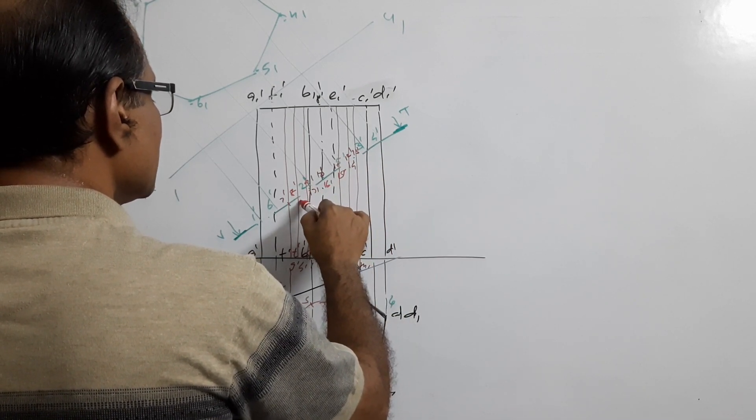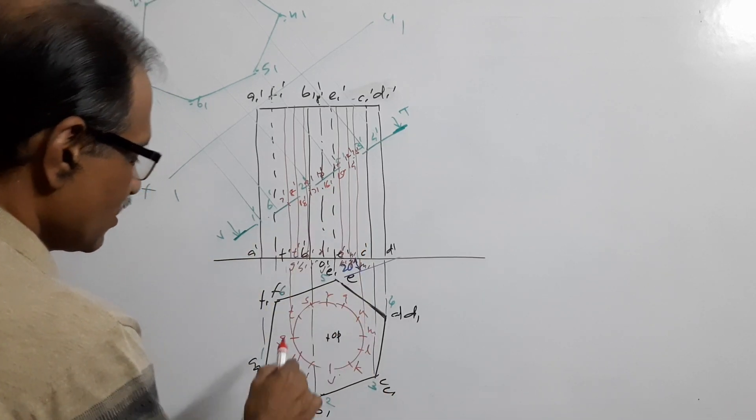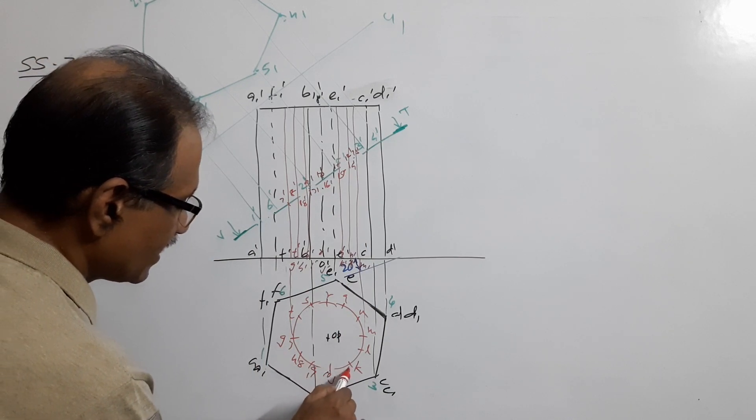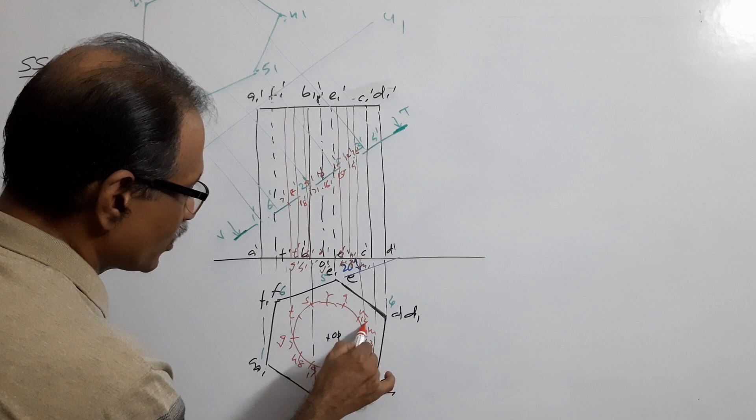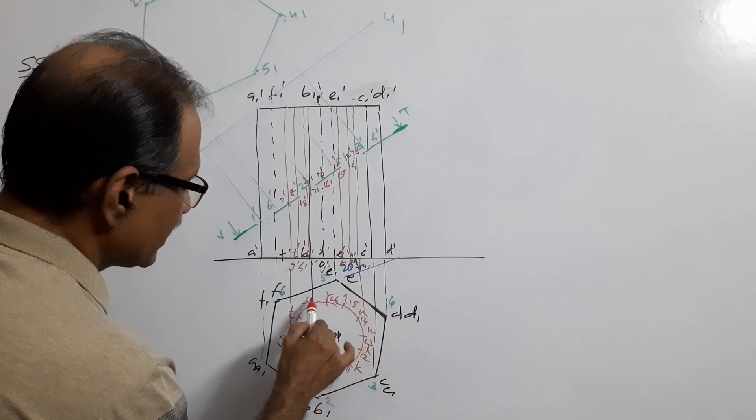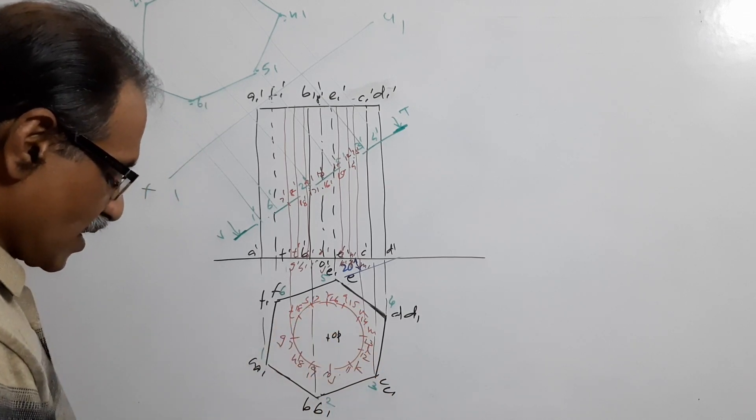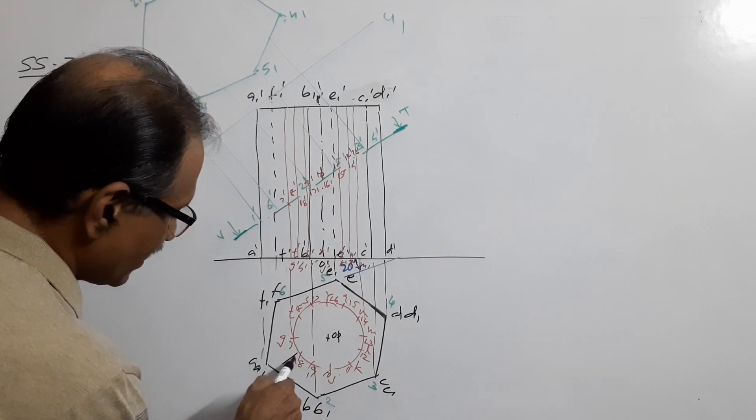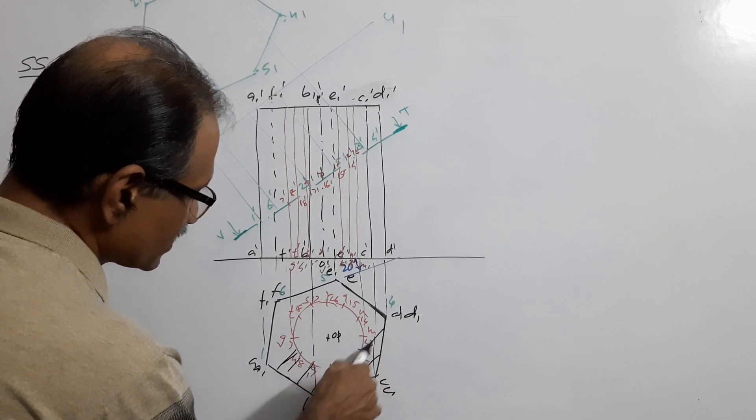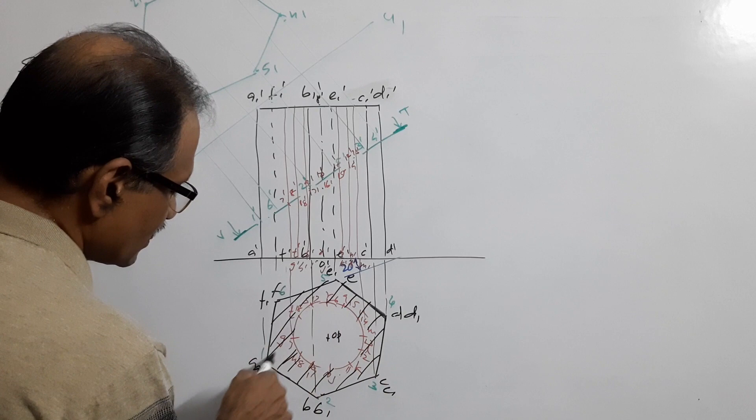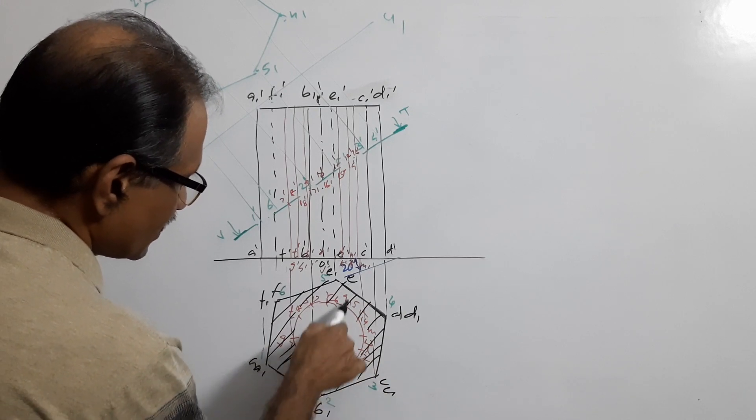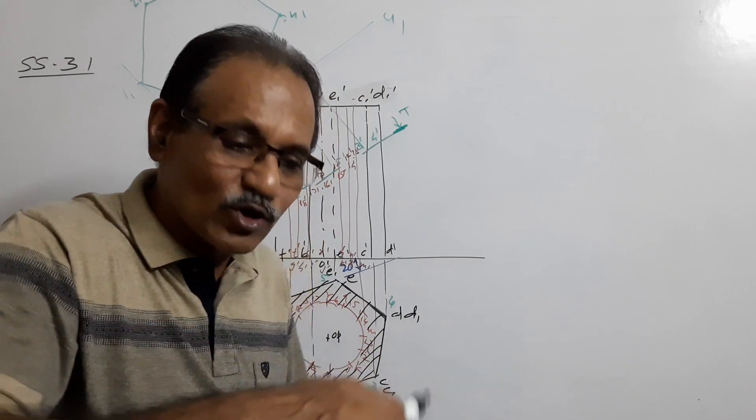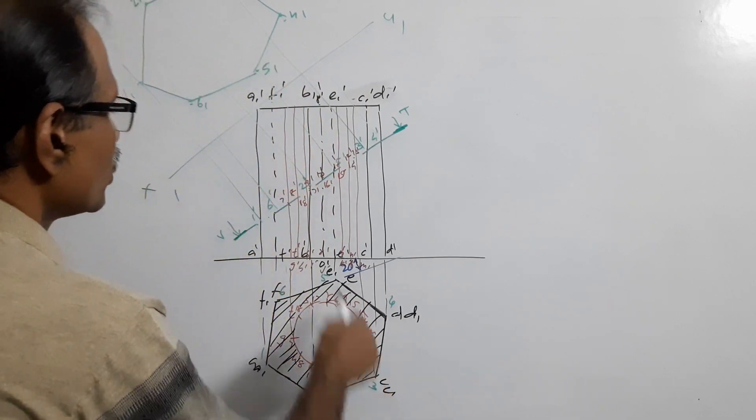Where are the points in plan? Mark 7, 8, 9, 10, 11, 12, 13, 14, 15, 16, 17, 18. Now where will you hatch? You will hatch the gap between the two surfaces, this gap, because at the center there is air, there is nothing, only air. Draw perpendicular projectors through all these points.